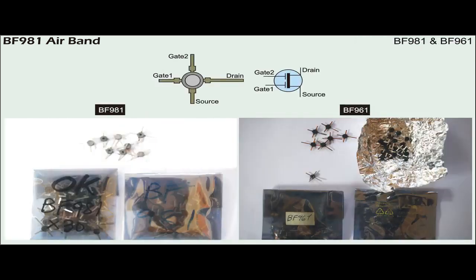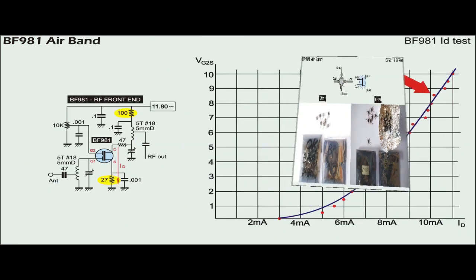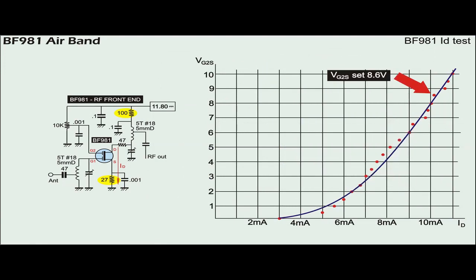Both the 981 and 961 are available from different sources and manufacturers. Therefore, their electrical characteristics can be very different and will require some sort of testing when necessary. To optimize the 981 RF amplifier, the ID should be set around 10 mA.